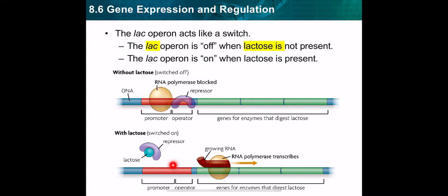So in which case is gene expression on? If there is no repressor on the operator, it means that gene expression and transcription are going on. If there is a repressor, the RNA polymerase is blocked and gene expression is turned off. This structure regulating gene expression is called an operon.